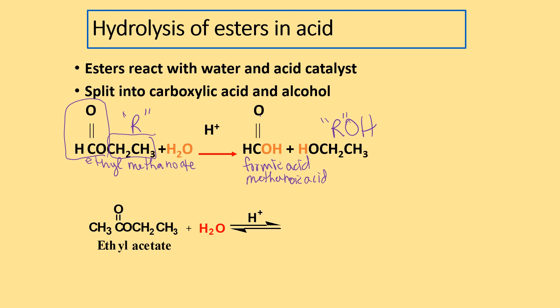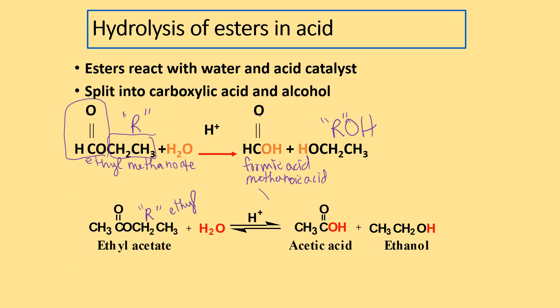Here's an ester being hydrolyzed in acid because you see the acid catalyst. What do you think it's going to make? If you said acetic acid and ethanol, you'd be right. The R part here is ethyl, and that's the kind of alcohol you get. The base name was acetate, but IUPAC is ethanoate, so you get ethanoic acid. We already knew that one.